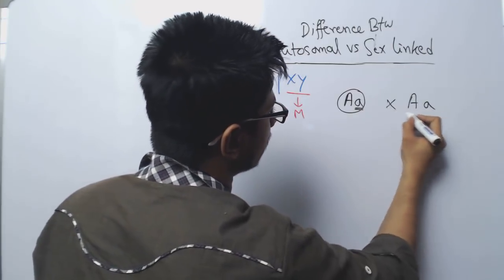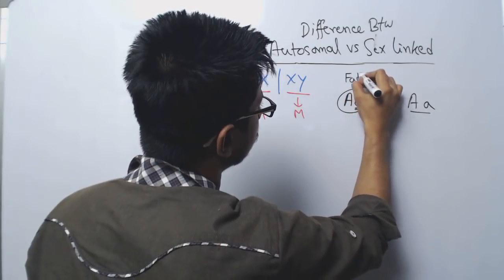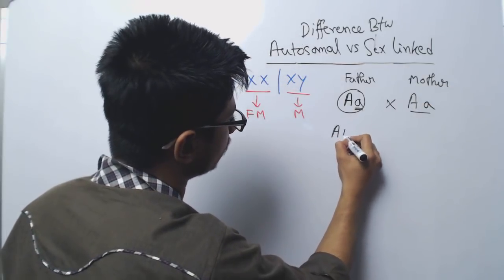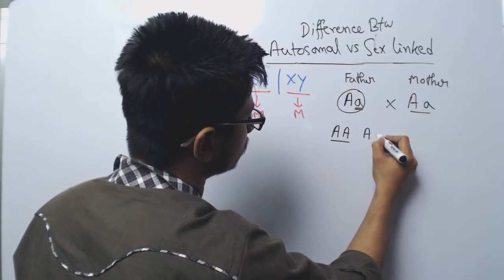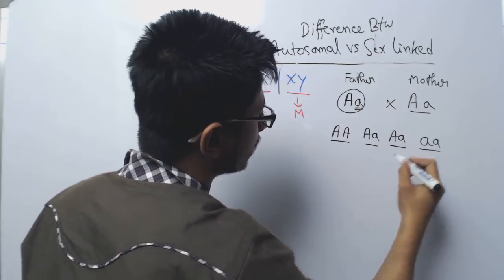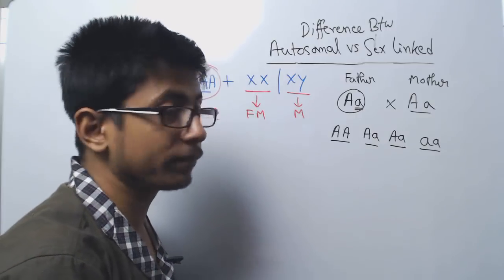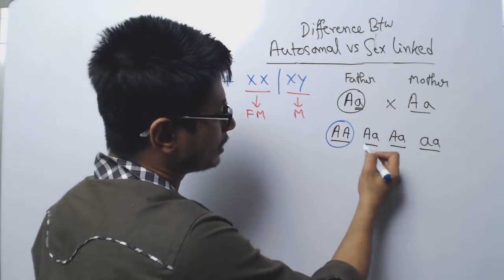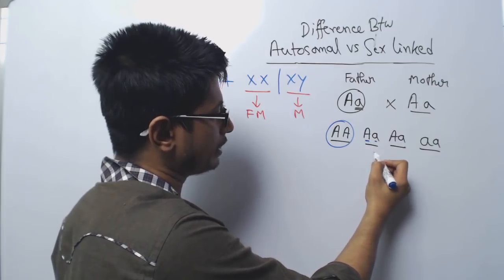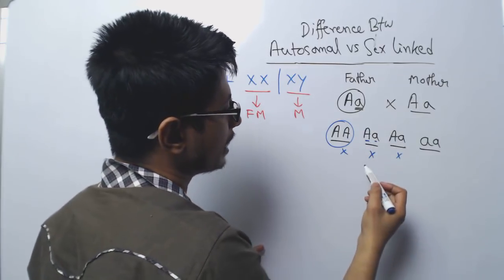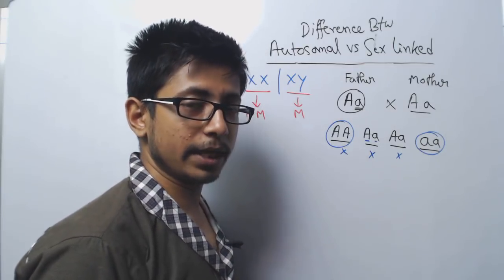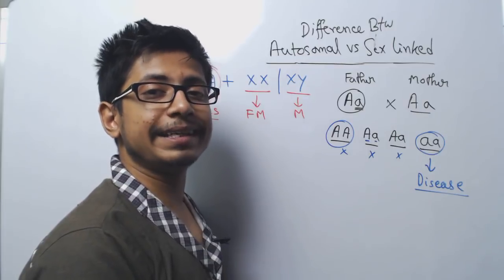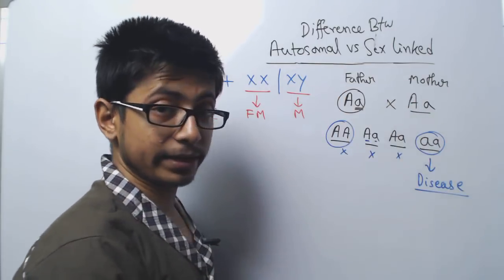Let us say this is the father (Aa) and this is the mother (Aa). After the cross, we can have four different offspring: capital A capital A, capital A small a, another capital A small a, and small a small a. The first offspring will not get the disease — they have both good copies. The Aa offspring have one good copy and one bad, but the good copy is dominant, so no disease. The last offspring gets both faulty copies and will get the disease. This is how autosomal inheritance is transferred from parent to offspring.